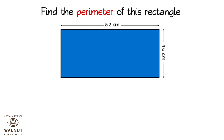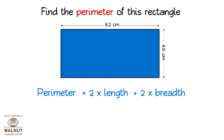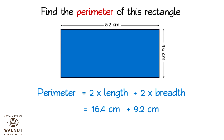Find the perimeter of this rectangle. Let us use the formula. Perimeter of a rectangle is 2 times the length plus 2 times the breadth — that is 2 into length plus 2 into breadth. We know the length and breadth and put those values in. That is 2 into 8.2 cm plus 2 into 4.6 cm, which is 16.4 cm plus 9.2 cm. We get the perimeter: 25.6 cm.